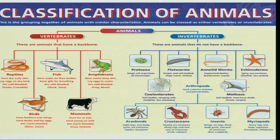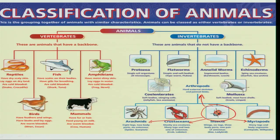Coming back to the classification of insects in the animal kingdom, insects under Arthropoda are closely related to arachnids, crustaceans, and myriapods. Arachnids commonly include scorpions, mites, spiders, and ticks, whereas crustaceans include crayfish, crabs, and lobsters, and myriapods mainly include centipedes and millipedes.